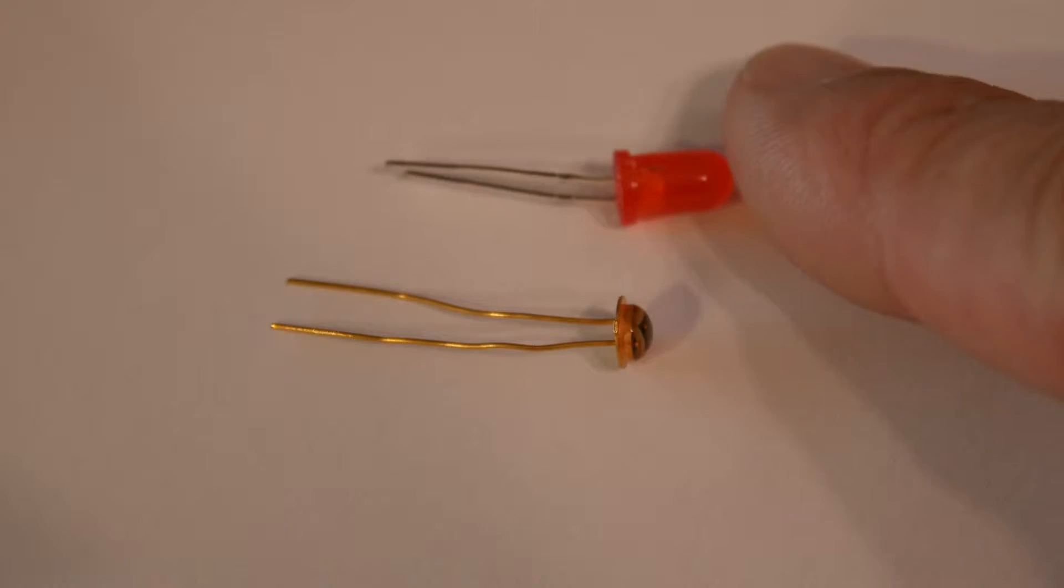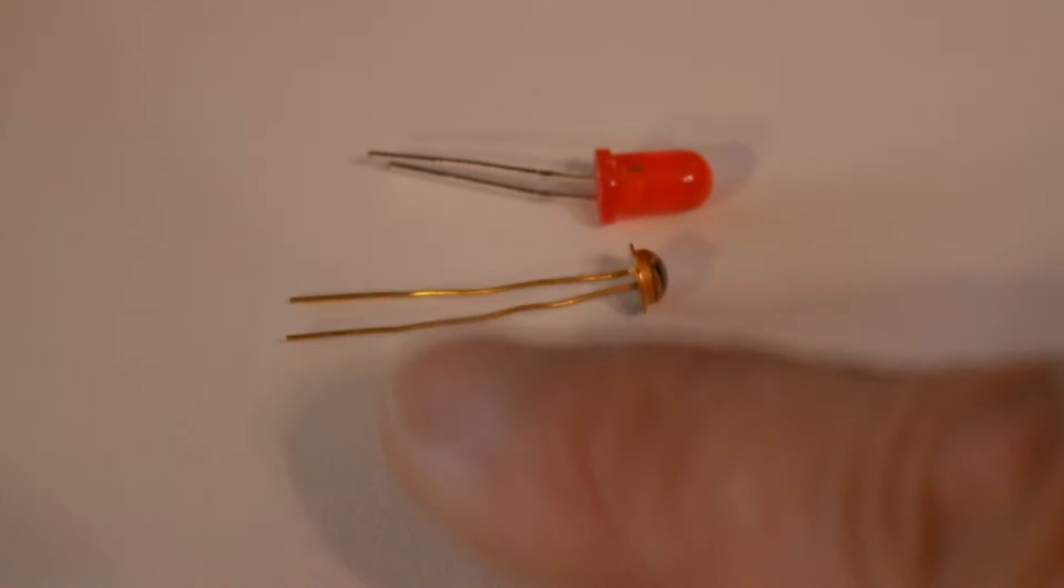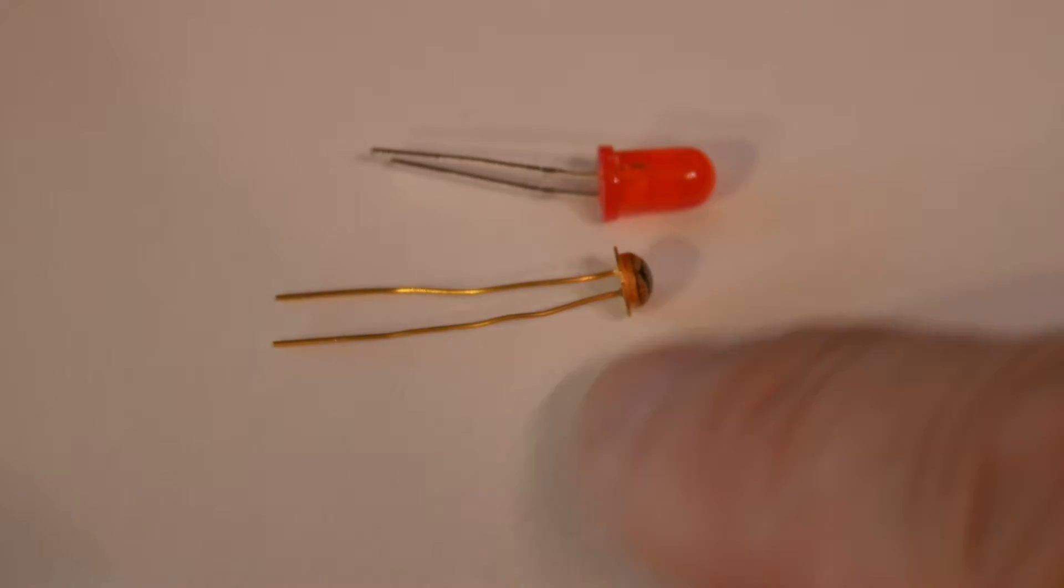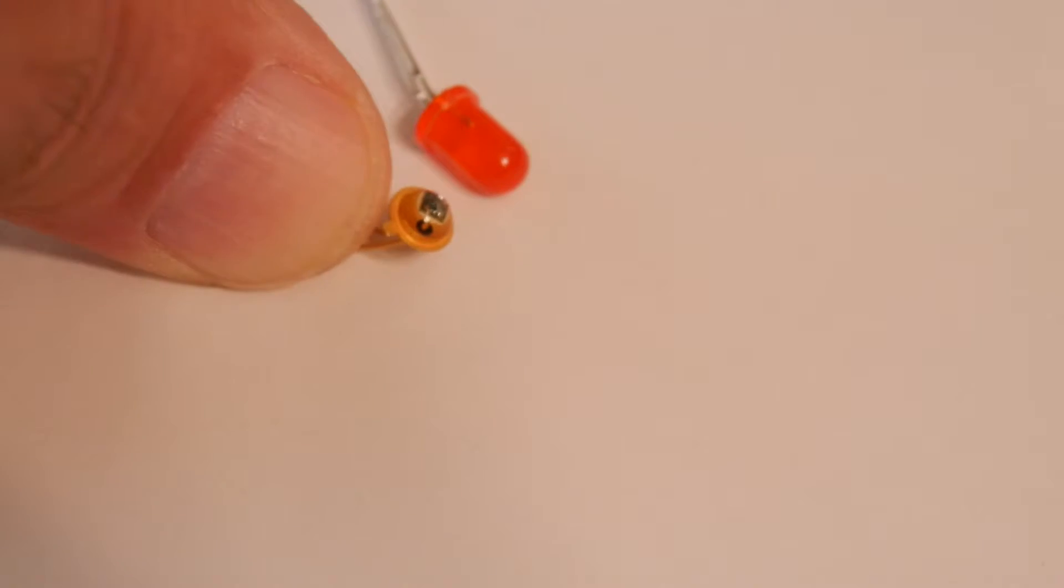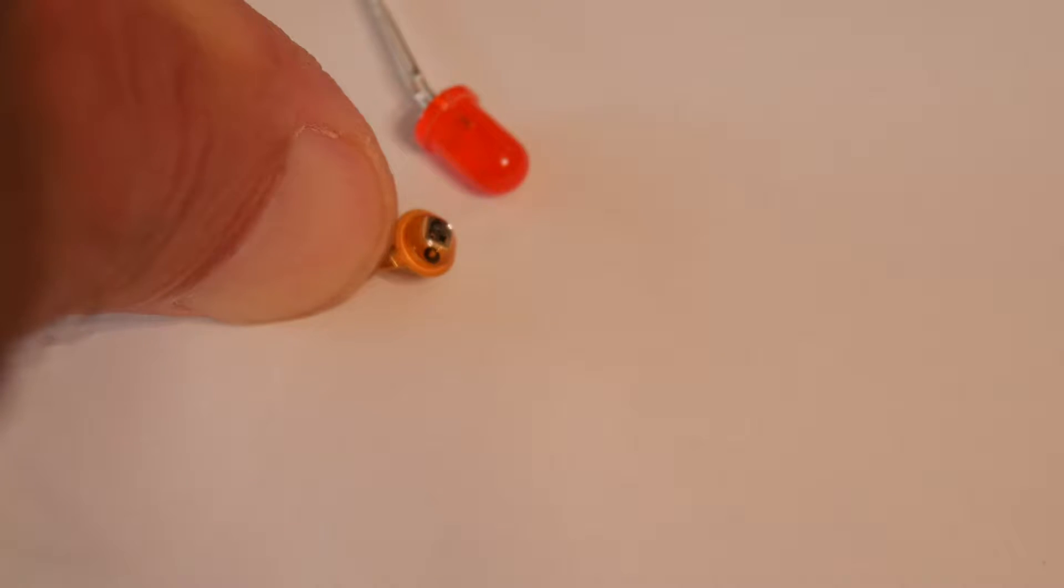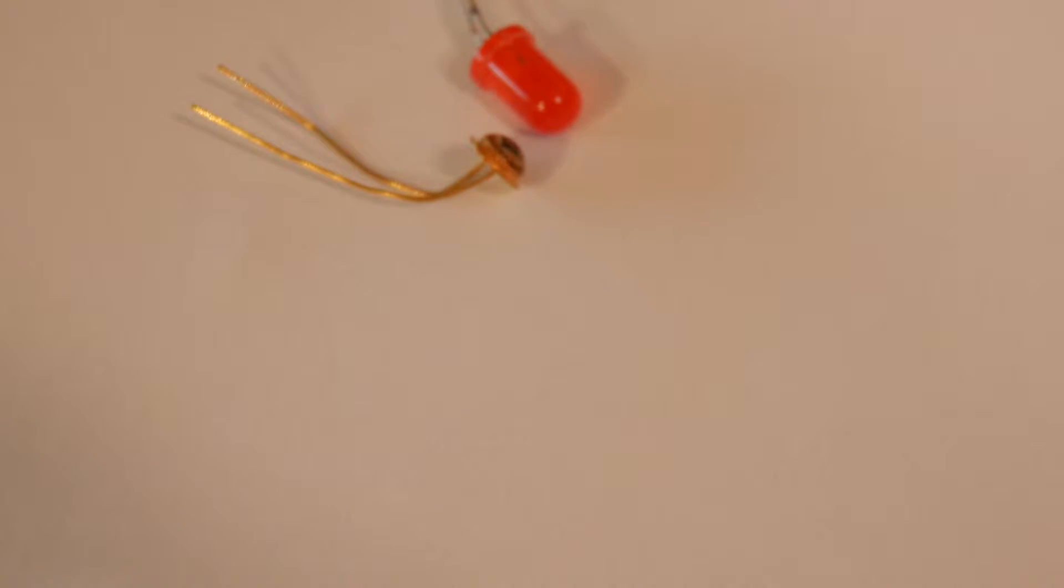We're going to play with some pretty basic devices. Here's a regular red LED, and here's a silicon photodiode. Let me show you the package here. It's just a silicon bonded out to a package. So let's hook these up and see what they do.